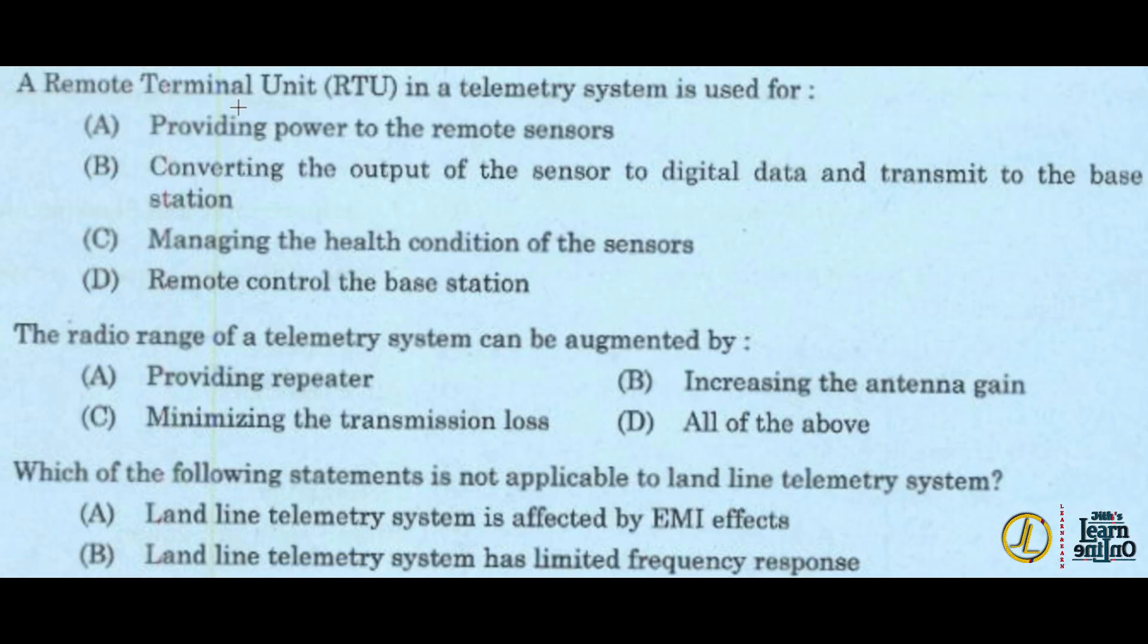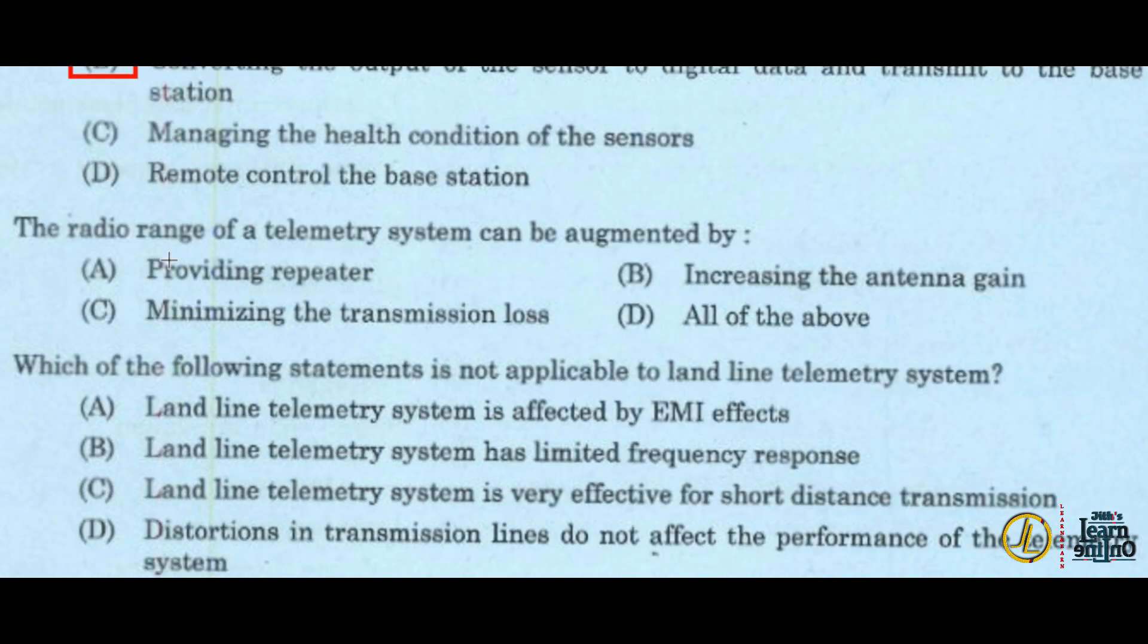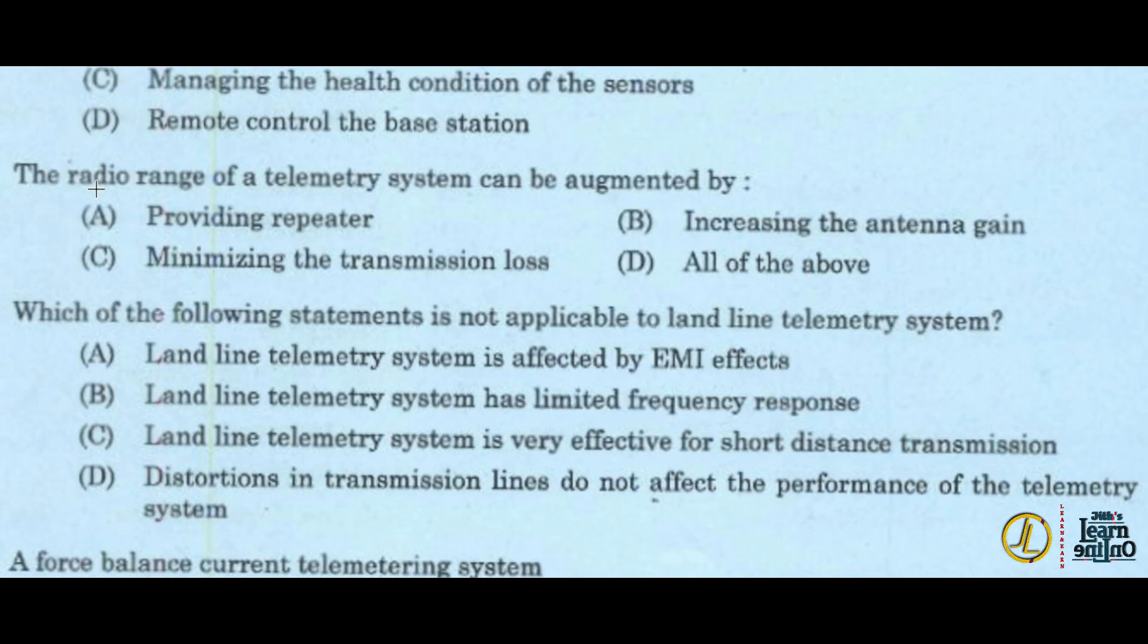A remote terminal unit RTU in a telemetric system is used for converting the output of the sensor to digital data and transmit to the base station. Option B is the answer. Next, the radio range of a telemetry system can be augmented by option D, all of the above: providing a repeater, increasing the antenna gain, minimizing the transmission loss.